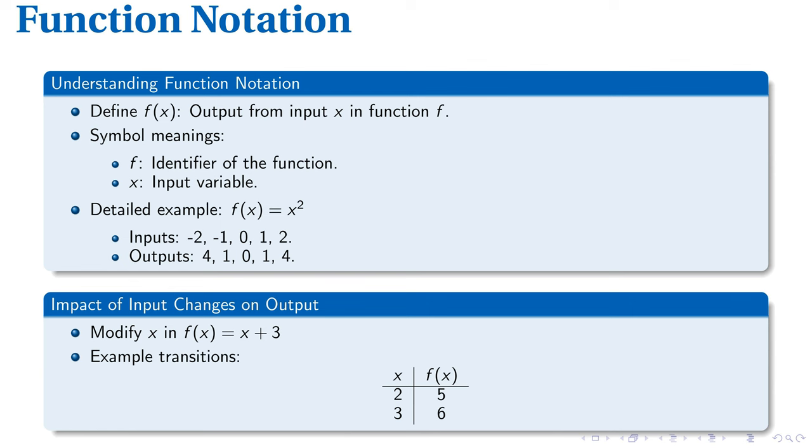As an illustration, let's consider the function f of x equals x squared. By substituting inputs like negative 1 or 2, we see the outputs are 1 or 4 respectively.